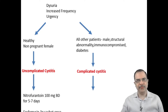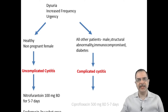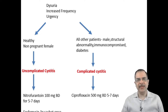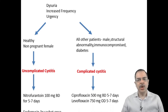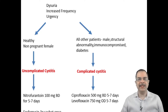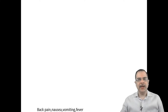In complicated cystitis, urine culture is needed. Before the culture report is ready, we can start empirical antibiotics, since culture takes usually 48 hours. We can start fluoroquinolones: ciprofloxacin 500 mg twice a day for 5 to 7 days, or levofloxacin 750 mg once daily for the same duration of 5 to 7 days. However, depending on the culture report, we may need to change the antibiotic if resistance is found.